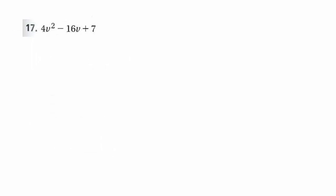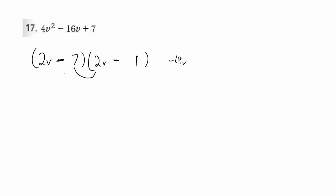Number 17 is still factoring a trinomial into two binomials. What makes this harder is the number 4 here — there are a lot more possibilities. But what makes it easy is that 7 is prime, so the only way to get that is 7 times 1. This could be 2v and 2v, or 4v and 1v. Let me try 2v and 2v. For the signs, a positive product but negative sum means two subtraction signs. This gives negative 14v and negative 2v — it worked out on the first try.